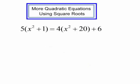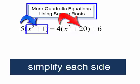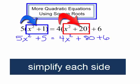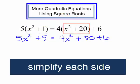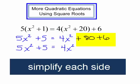I have the equation 5 times x squared plus 1 equals 4 times x squared plus 20 plus 6. I need to begin by using the distributive property and simplifying each side. I have some like terms on the right side — I will combine those. 80 plus 6 is 86. And now each side is simplified.